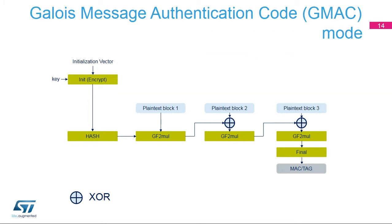Galois Message Authentication Code, or GMAC, allows authenticating a message and generating the corresponding message authentication code. GMAC is similar to GCM, except that it is applied to a message that only contains the plain text authenticated header. All steps and settings are the same as GCM, except that the payload phase will not be used.